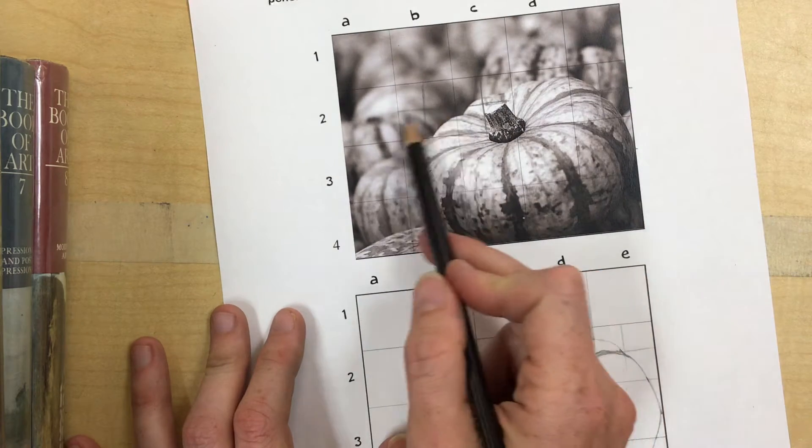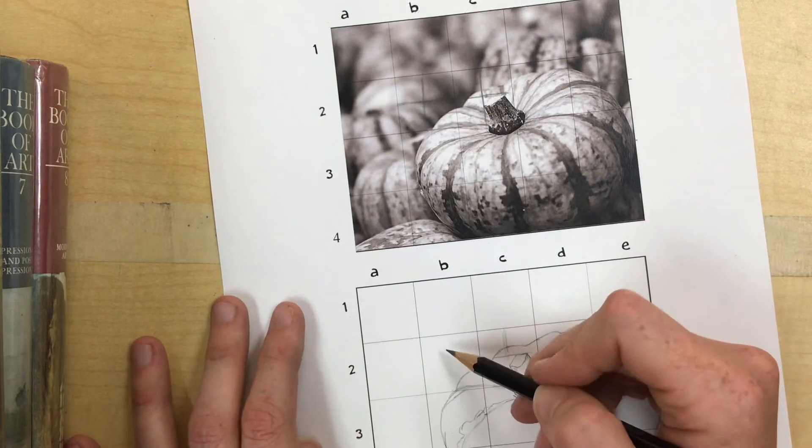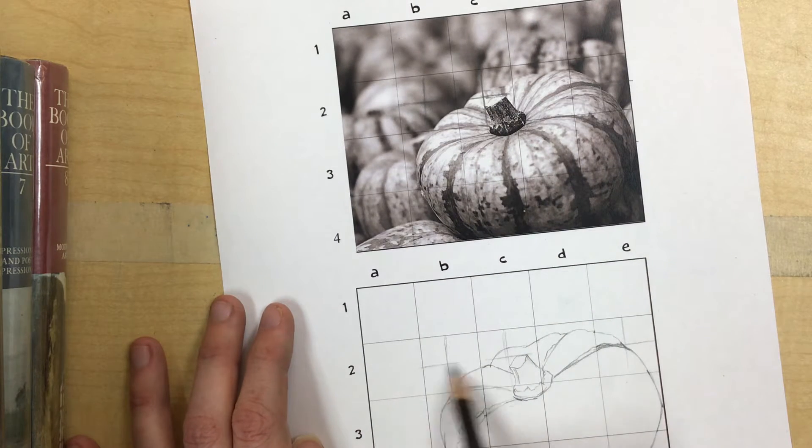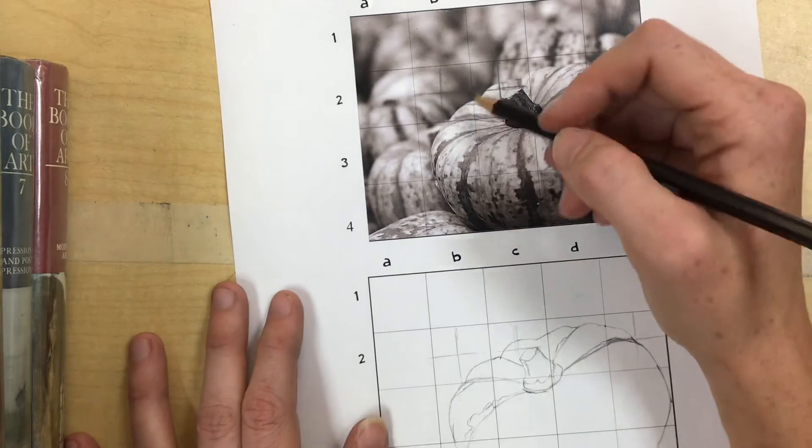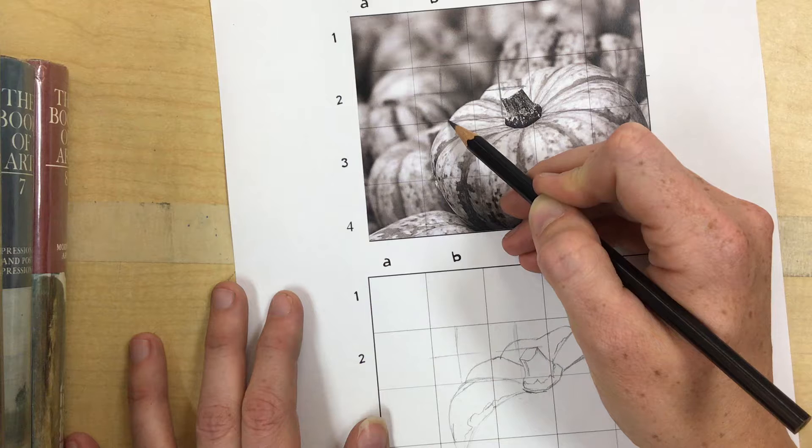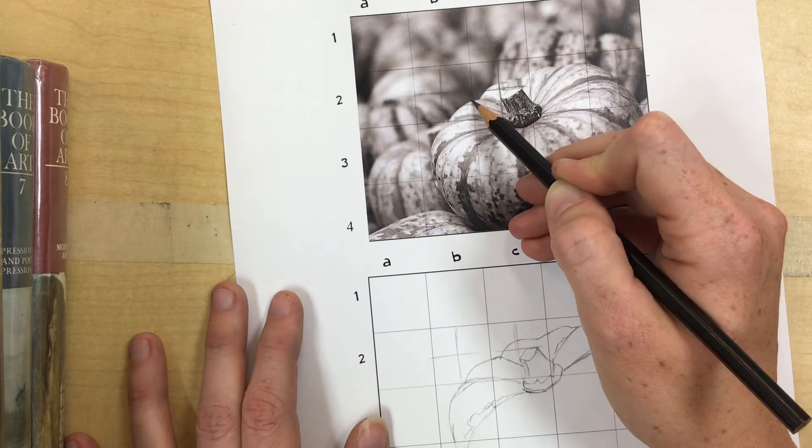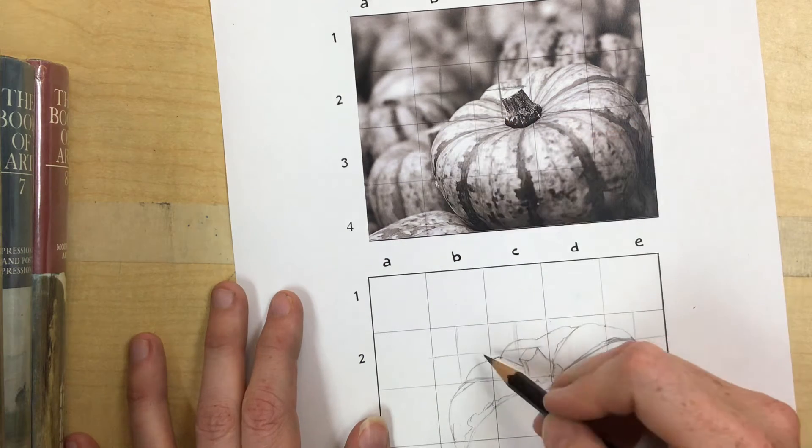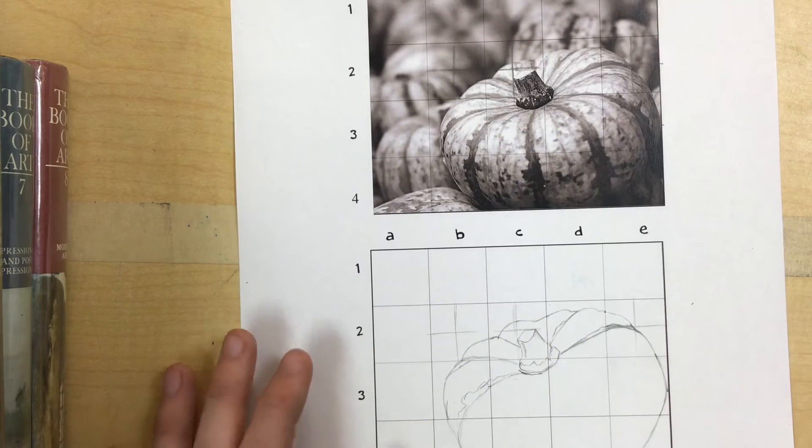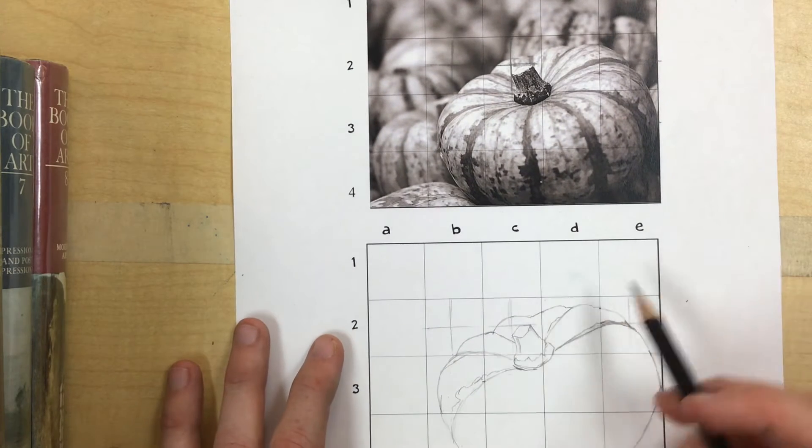I can break that down into half both directions. I can do the same thing down here really lightly because, like I said, you usually don't want to see the grid in the end. And then it helps me see like, okay, this crosses the line just slightly to the right of the halfway point and this is about halfway down between, or a little over. So it helps you figure out where things go.